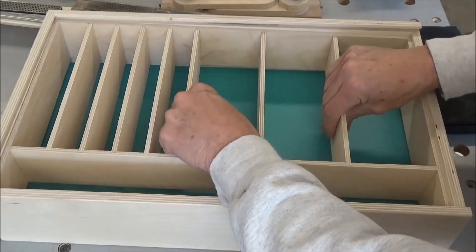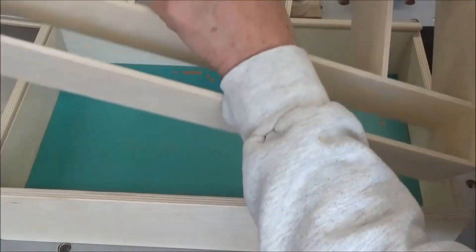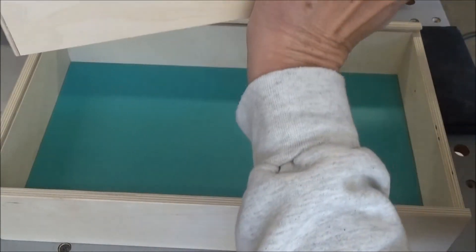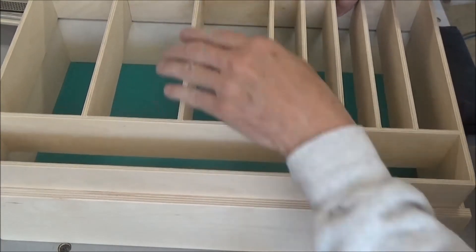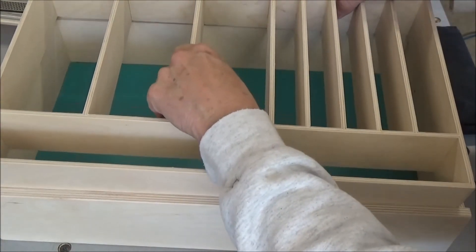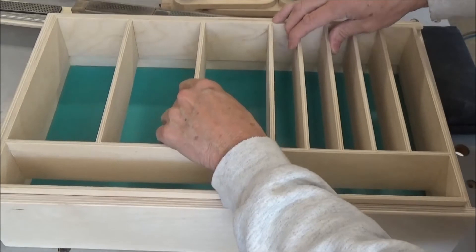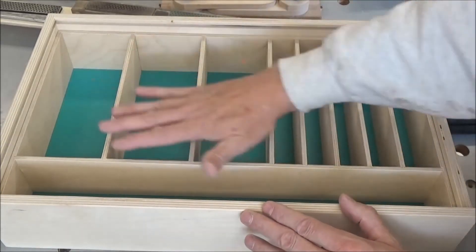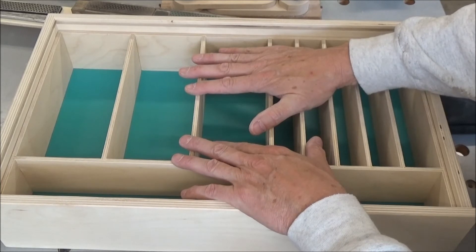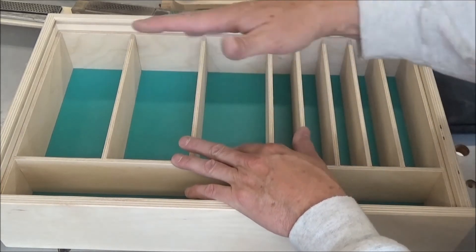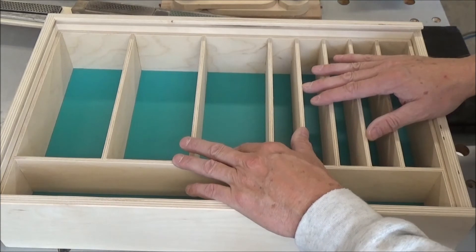And if you ever wanted to change this out - actually that goes this way, I can tell by the way it's sanded. I sanded the top side a lot better than the bottom side. So it slips in. And if you ever wanted to change the layout, all you would need to do would be to replace this grid. Simple project of some quarter inch plywood.